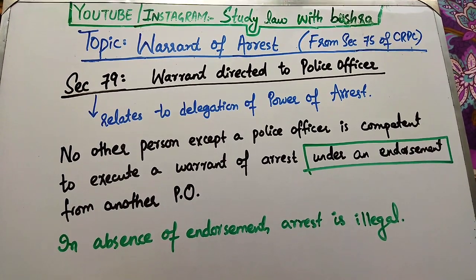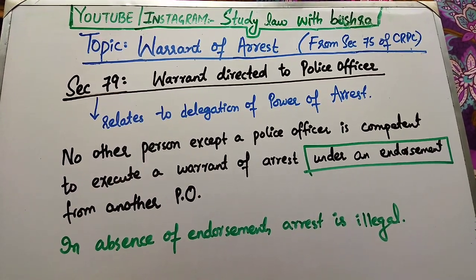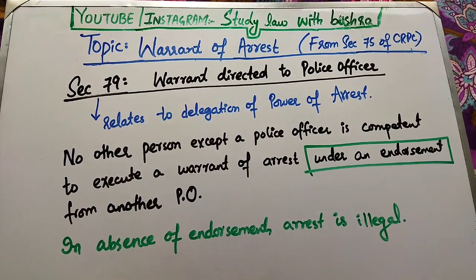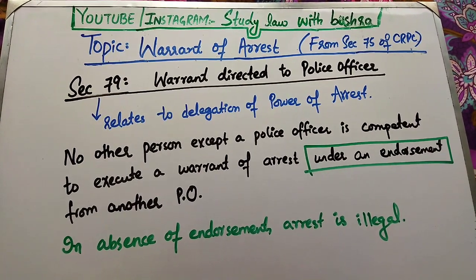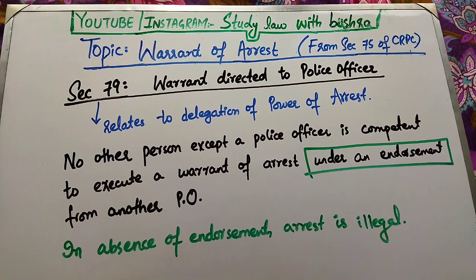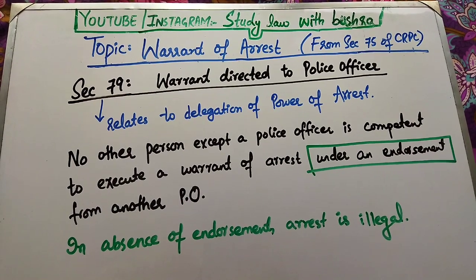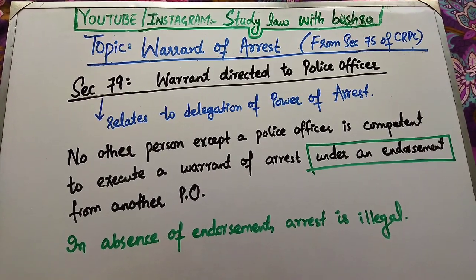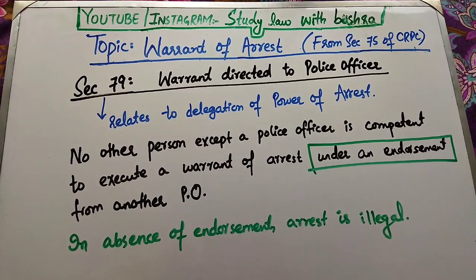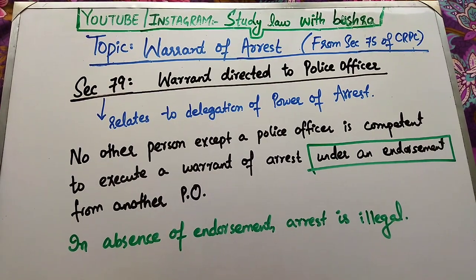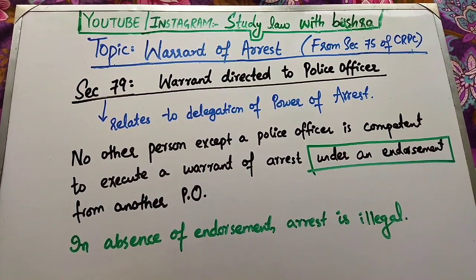Section 79 deal کرتا ہے Warrant directed to police officer اور basically یہ delegation of power of arrest سے متعلق ہے. اگر کسی ایک police officer کو warrant of arrest issue کیا گیا ہے تو اس کی جگہ کوئی دوسرا police officer اس warrant کو execute نہیں کر سکتا، سوائے اس صورت کے جب endorsement کے ذریعے اس دوسرے officer کا نام لکھا ہو. بصورتِ دیگر وہ warrant illegal ہوگا under section 79.